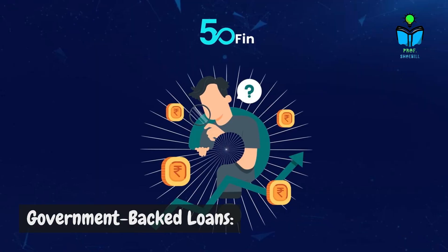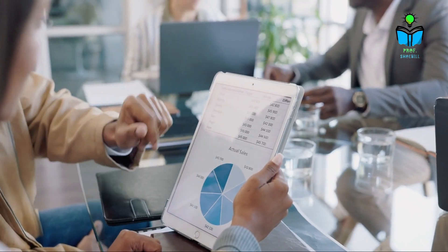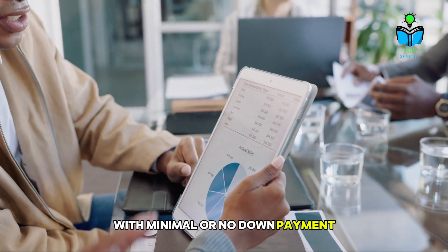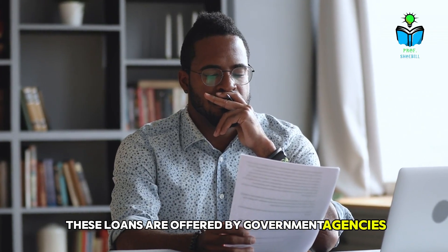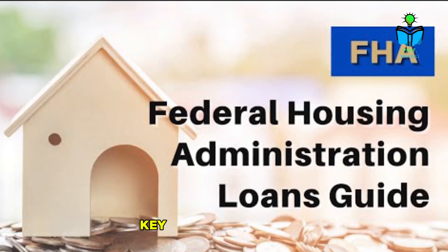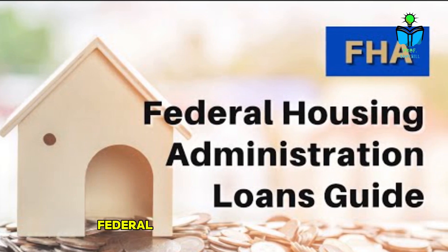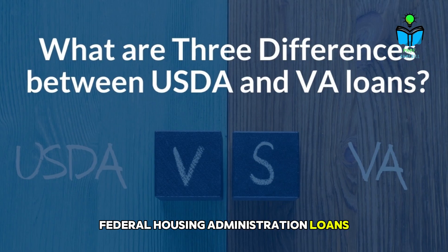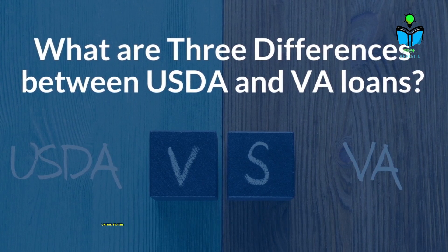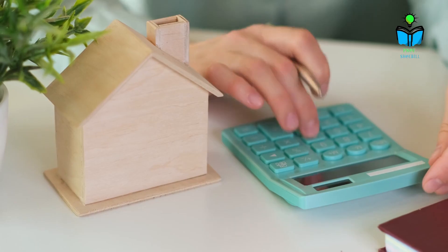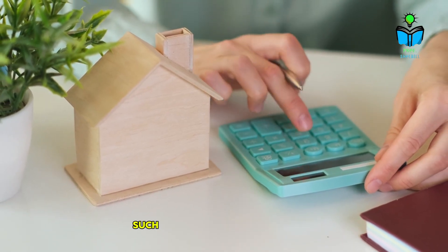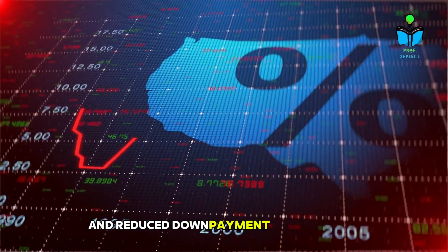Strategy 5: Government-backed loans. Government-backed loans provide a valuable opportunity for investing in real estate with minimal or no down payment. These loans are offered by government agencies or through government-sponsored programs to facilitate home ownership. Key examples include FHA (Federal Housing Administration) loans, VA (Veterans Affairs) loans, and USDA (United States Department of Agriculture) loans. They are designed to make real estate more accessible by offering favorable terms such as lower interest rates and reduced down payment requirements.